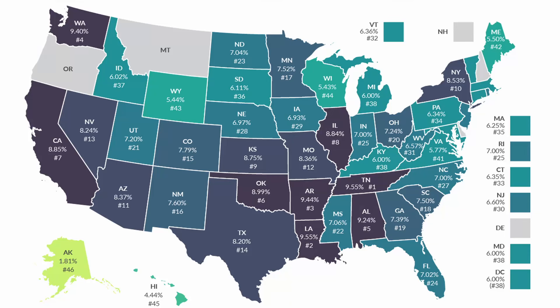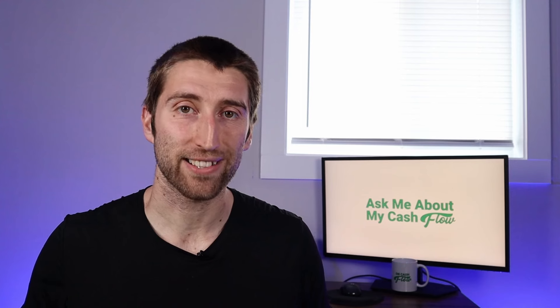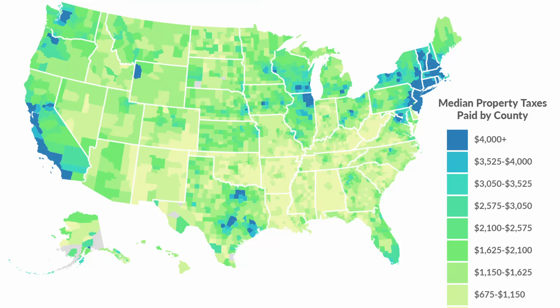We also have taxes on stuff that you buy, for example your sales tax, and there's also an excise tax. This is usually a tax that is built into the cost of a product that you might not even see. Lastly, the third main category is a tax on things that you own — this is the closest thing that we have to a wealth tax. The most common forms include property taxes and personal property tax, such as when you go to register your car, your boat, your RV, and things like that. And that's just to name a few of the main ones.